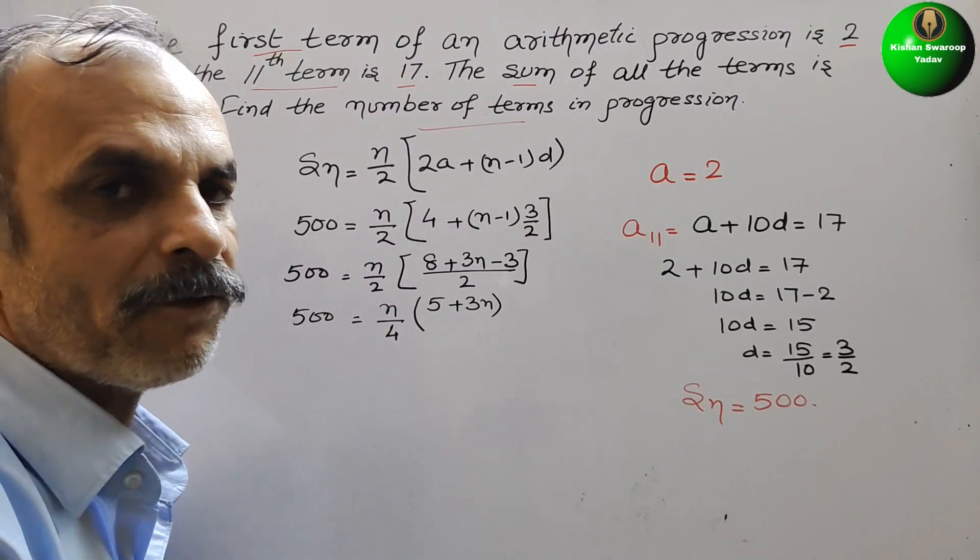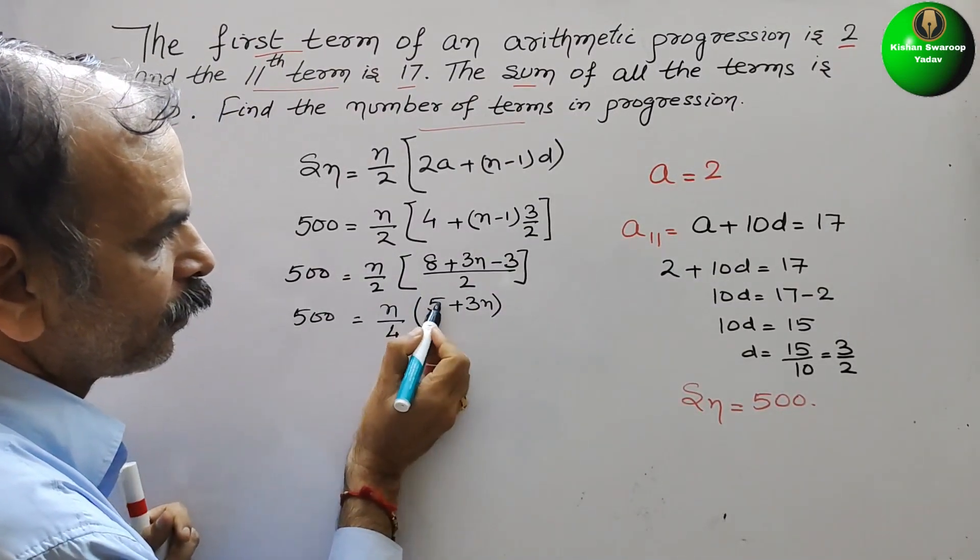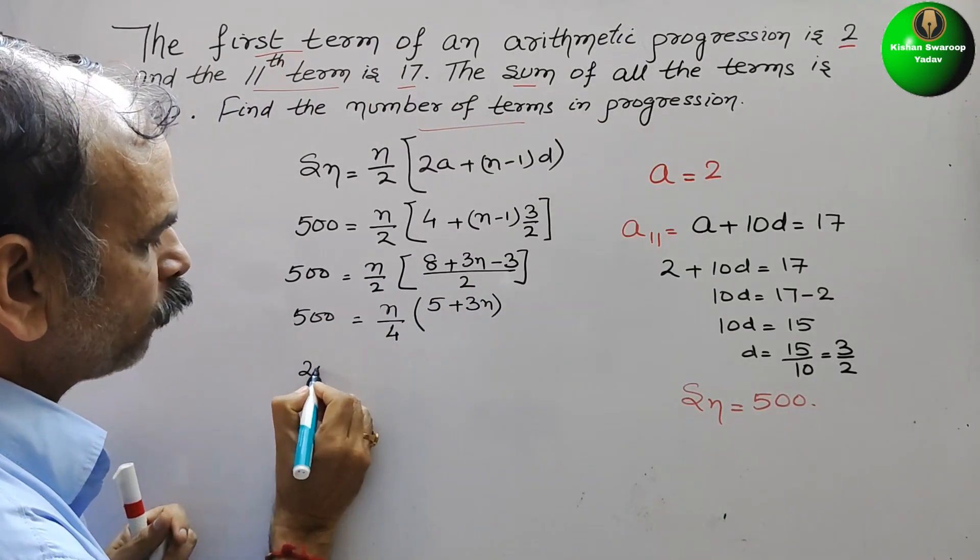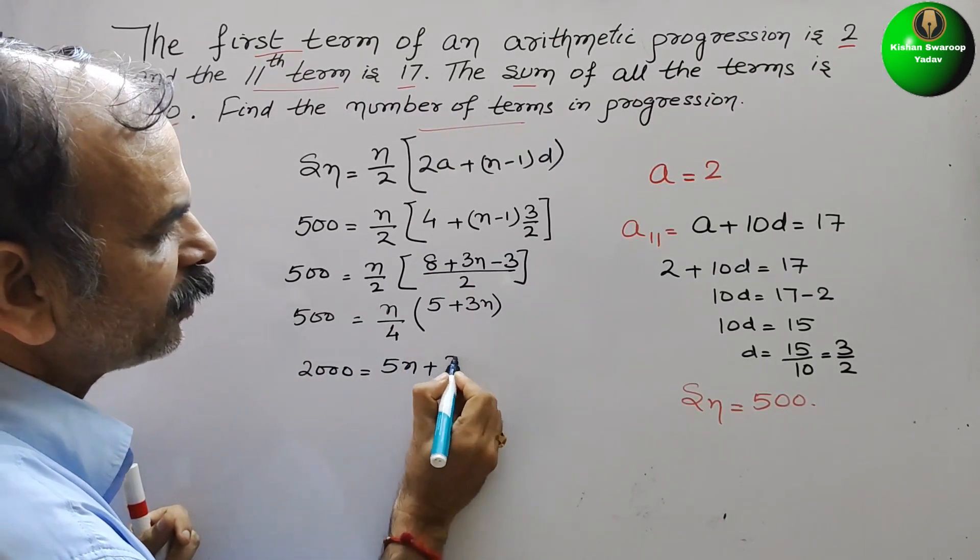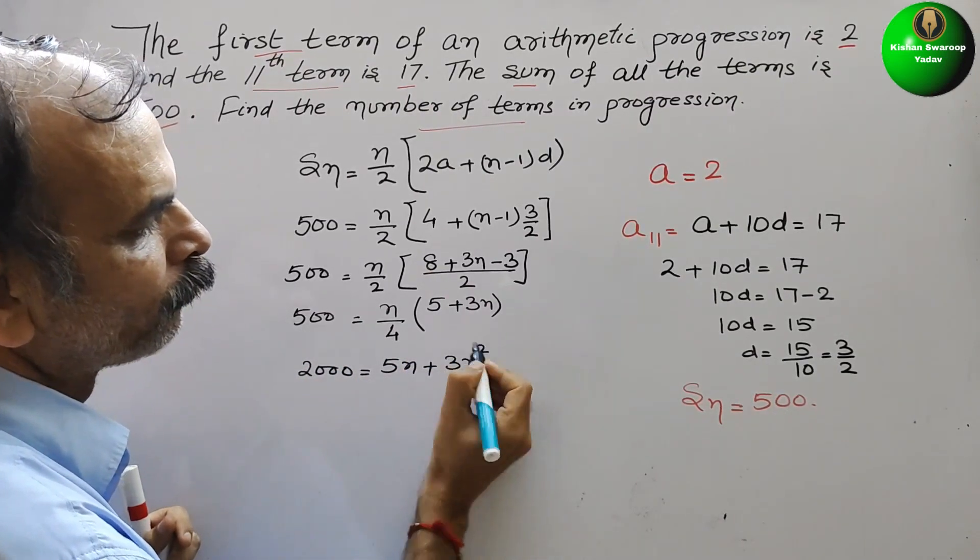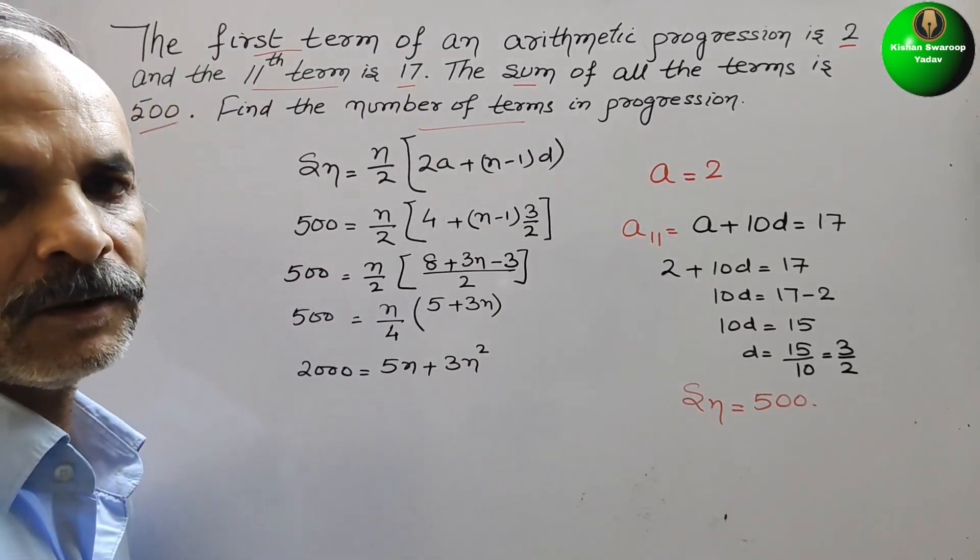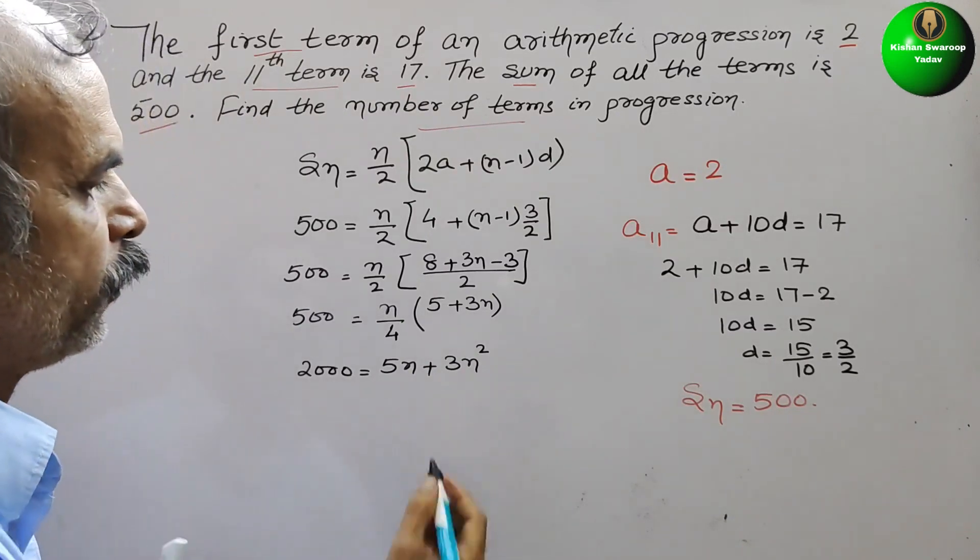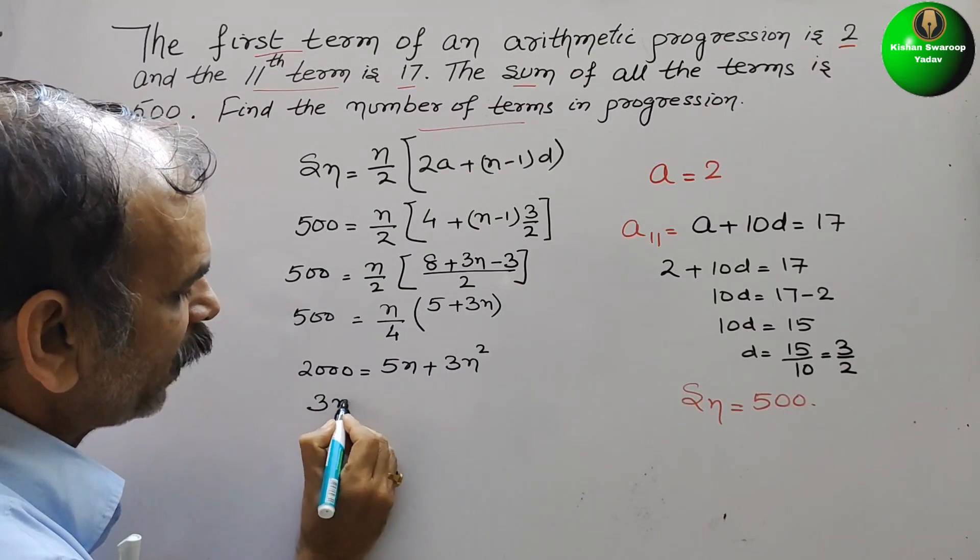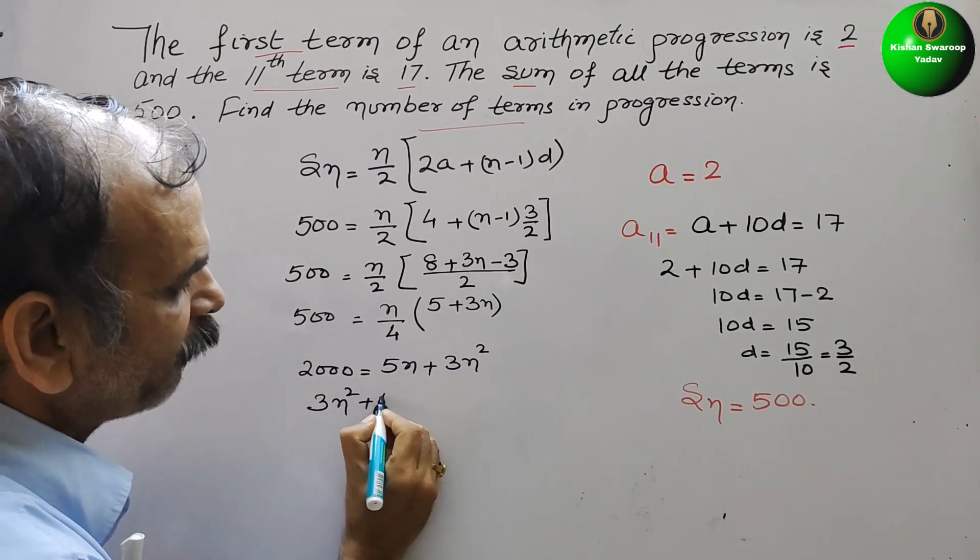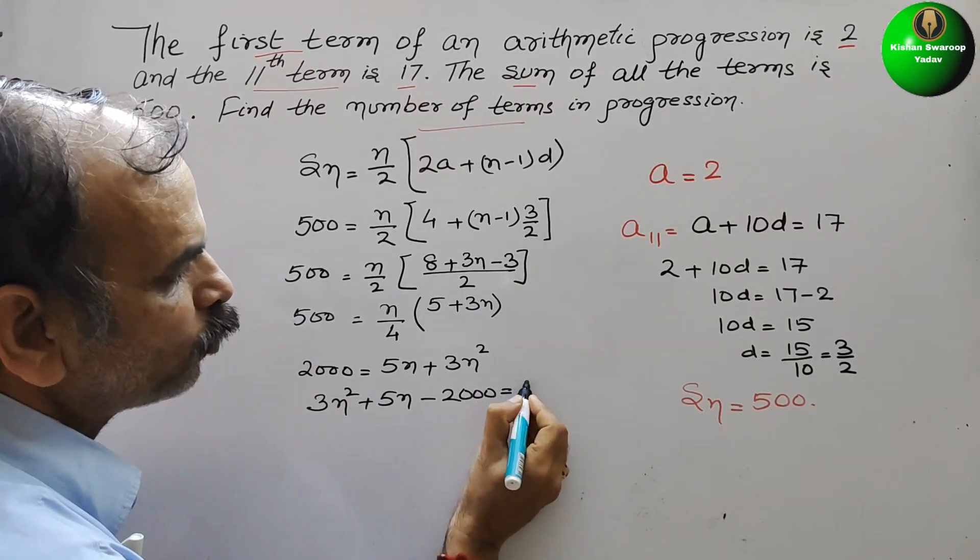Now, cross multiply. So 500 into 4 is 2000. Just multiply this. What we will get? 2000 is equal to 5n plus 3n². So, we can see this is nothing but a quadratic equation. So we will solve it. So here comes, now we just rearrange them. We will get 3n² plus 5n minus 2000 is equal to 0.